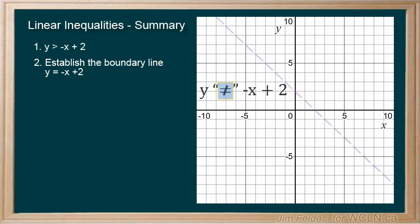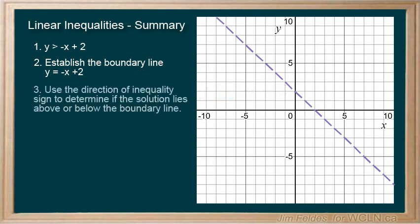Without an equal sign, a dashed line indicates the line is not part of the solution. Check the direction of the sign. Greater than means shade above and less than means shade below.